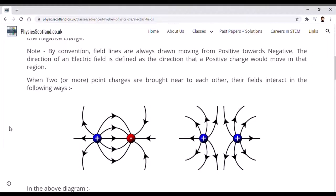The one on the left, which looks very similar to a bar magnet's magnetic field, shows the interaction between a positive and a negative charge. The charges are close enough to each other so the fields interact, and we see that the field lines have arrows moving from positive to negative.